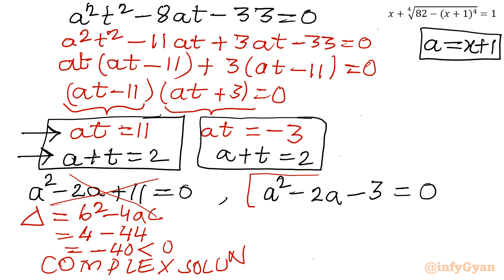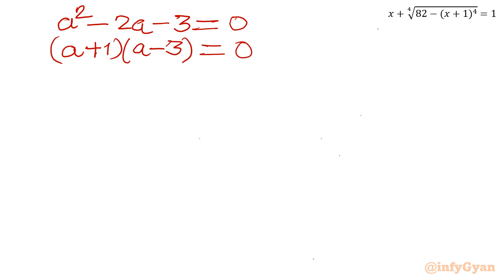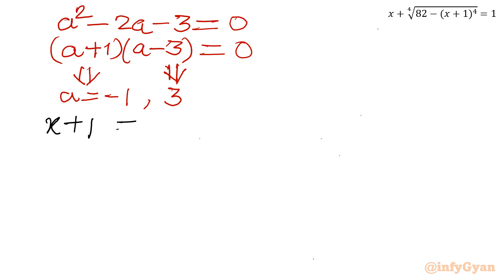Solving A² minus 2A minus 3 equal to 0 by factorization: (A+1)(A−3) equal to 0, giving A equal to minus 1 or A equal to 3. Putting back our substitution A equal to x+1: x+1 equal to minus 1 gives x equal to minus 2, and x+1 equal to 3 gives x equal to 2.